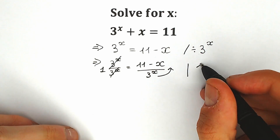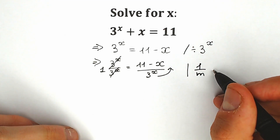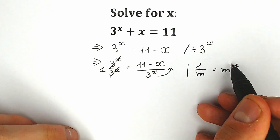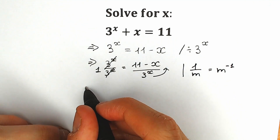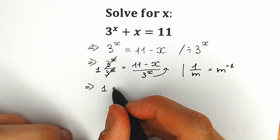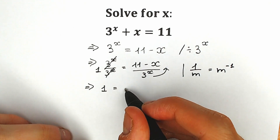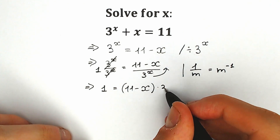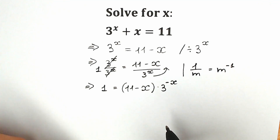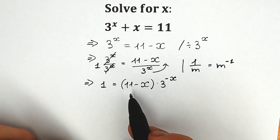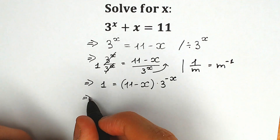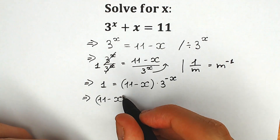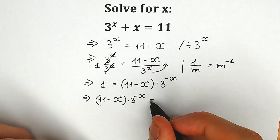This is a well-known algebra property: when we have 1 over m, we can write it as m to the power minus 1. So when we move it from the denominator to the numerator, we change the power to the opposite sign. So on the left side we have 1, and on the right side we have (11 minus x) times 3 to the power minus x, which gives us (11 minus x) times 3 to the power minus x equals 1.